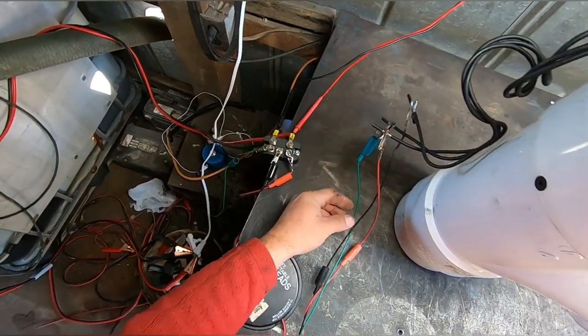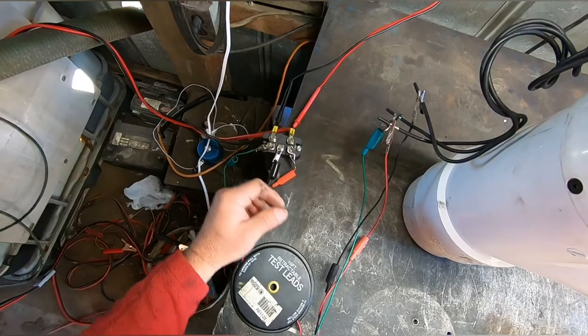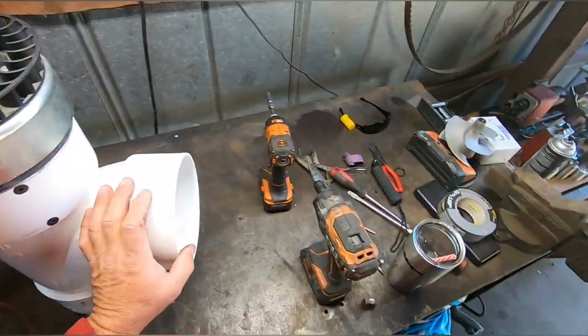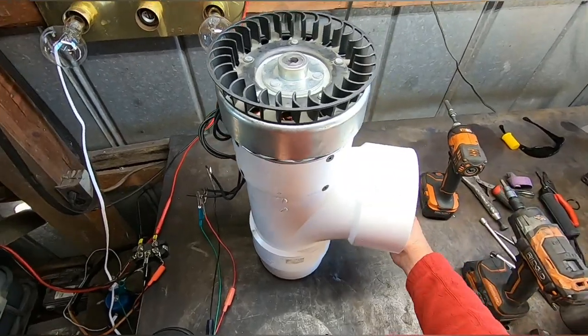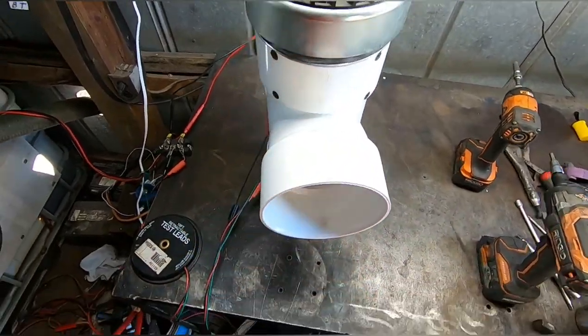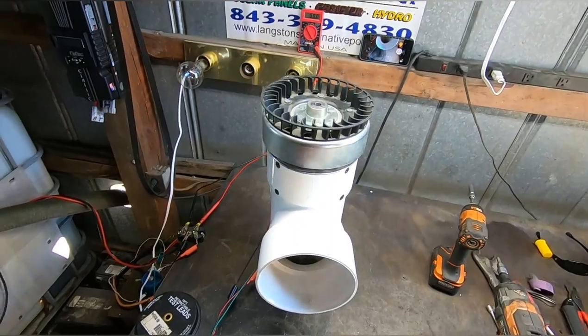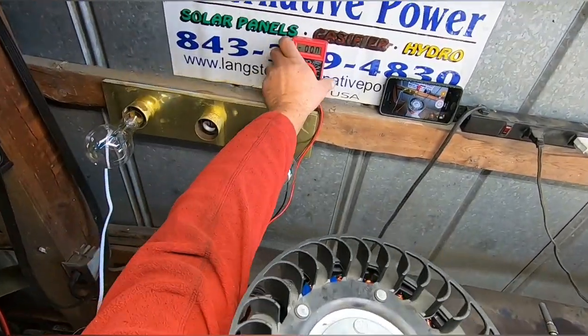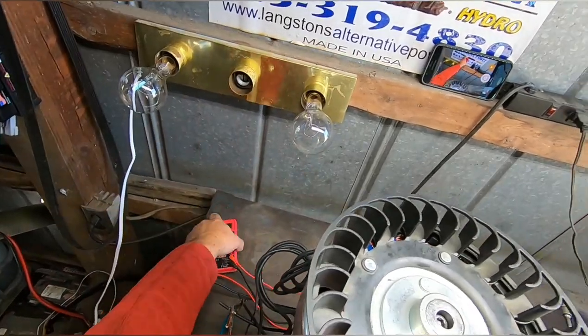We just got these little small test leads hooked to the rectifier, checking it out. That one's ready to go. If you need one, just give us a call at 843-319-4830, Langston's Alternative Power. Y'all have a blessed day.